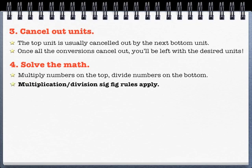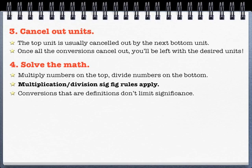You can plug it in your calculator, just simply multiplying the things on top, dividing the things on the bottom. Multiplication and division sig fig rules apply, so usually it's a weak link situation. Remember that definitions will not convert. So the fact that 12 inches equals 1 foot, those numbers will not limit you.